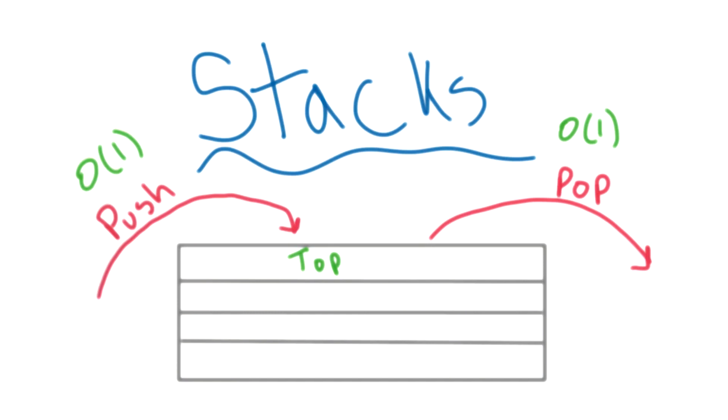Now, here's a possibly confusing point. Because a stack is pretty abstract, it could actually be implemented with another data type. What each element looks like and how they're connected aren't actually specified, just the methods for adding and removing elements.